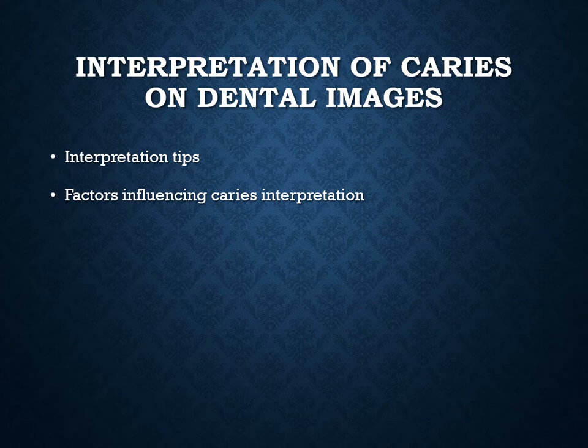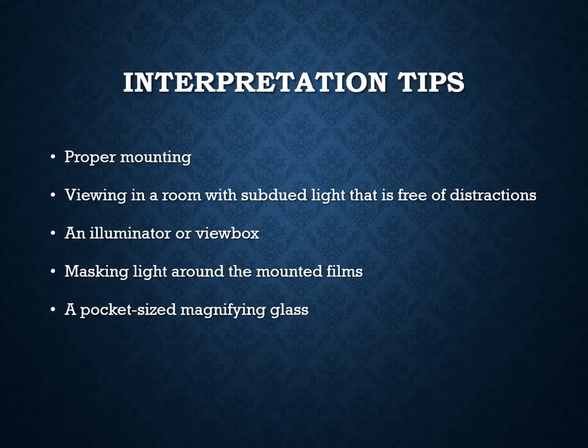Interpretation tips include proper mounting — whether using film or digital, images must be properly mounted where they're supposed to be. If a mandibular molar is placed where the maxillary molar should be, you might think there's no cavity on a tooth when actually you're looking at the wrong tooth. Proper mounting lets you cross-check: you see a radiolucency on the bitewing, check the PA, and confirm the same radiolucency. Remember, you're not going to say the word 'cavity' — we talked about that.